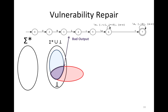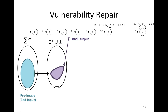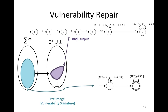The next phase is repairing this bug automatically. Given the bad output, we use pre-image computation to compute what we call the vulnerability signature DFA. This automata represents the vulnerability signature — the set of input values that, if given to the function, will result in a cross-site scripting vulnerability according to the attack pattern.